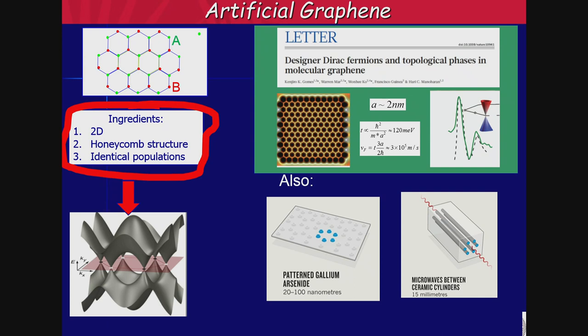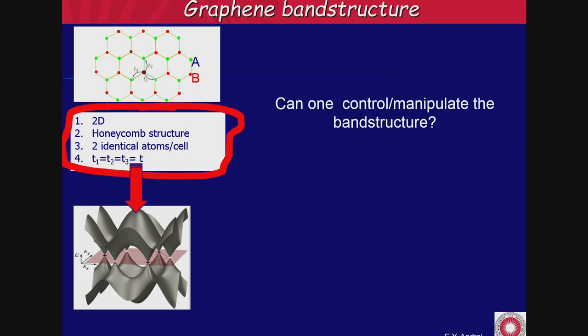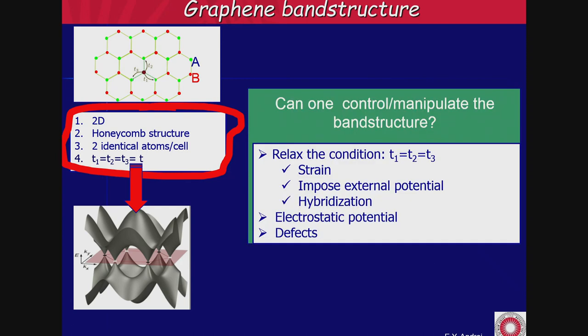So as long as you have those three ingredients — because the only thing that goes in there is geometry: two-dimensional honeycomb and some sort of interaction between the sites — you get graphene-like physics. When we have a perfect structure, all the hopping parameters from one atom to its nearest neighbor are identical. But if we change these hopping parameters — if we don't make them identical — we can change the band structure. You can stretch it, impose an external potential by superposing graphene layers or adding boron nitride, add an electrostatic potential, or introduce defects, giving all sorts of interesting band structures.